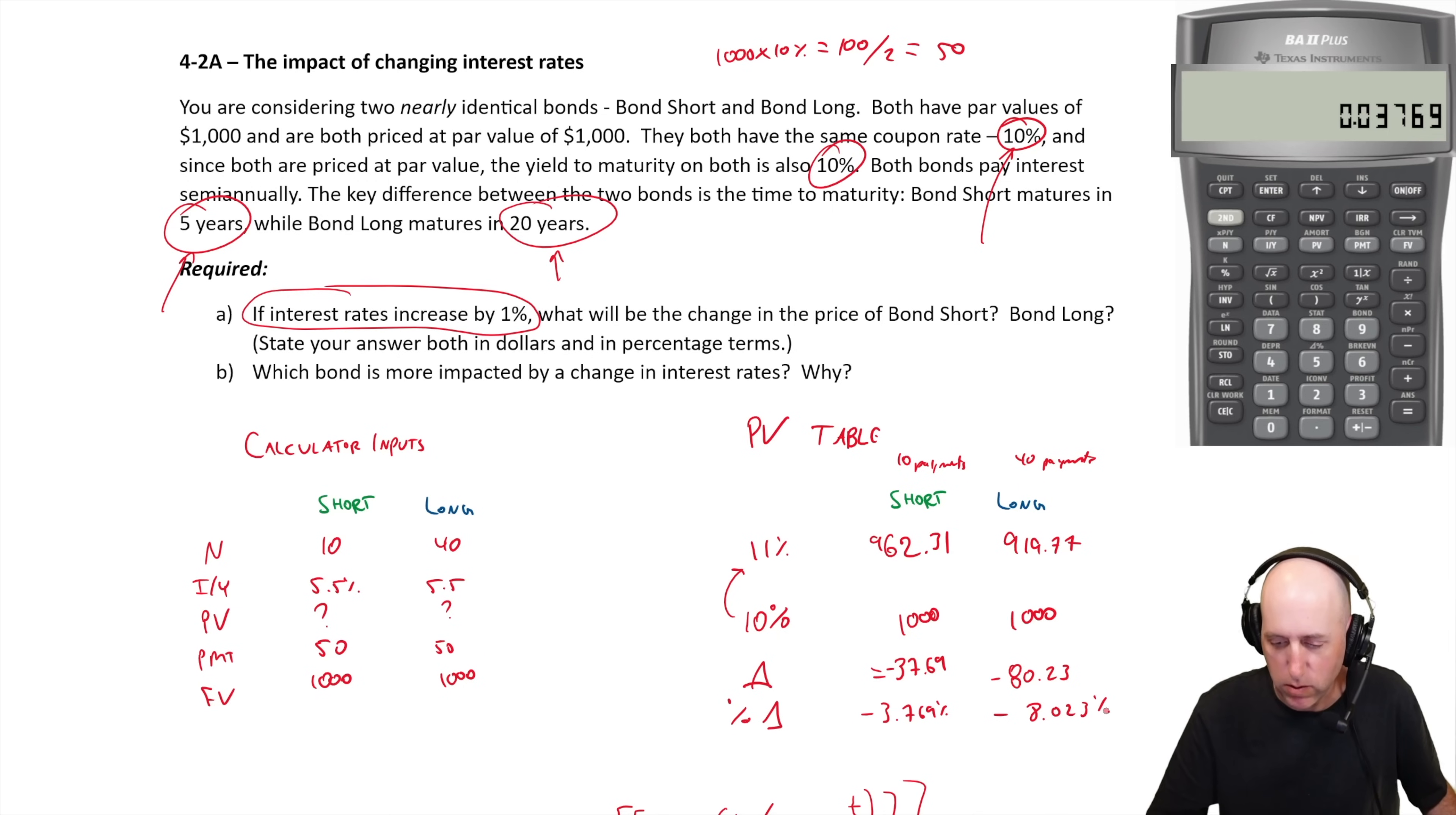As we speculated, the longer term bond has higher interest rate risk, and that should make sense. If you're going to get 40 interest period payments over a number of years, if interest rates fluctuate, that's risky for you holding the longer term bond. By the way, if interest rates in the market went down, what would you expect to happen?